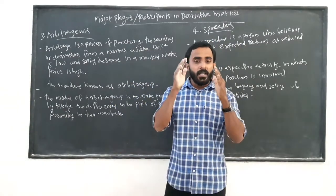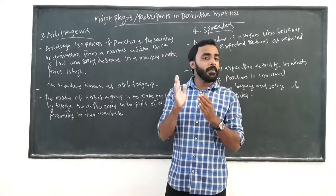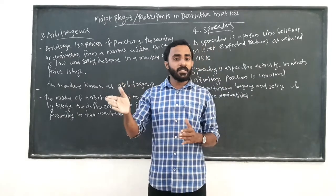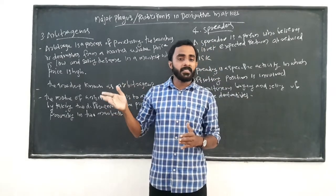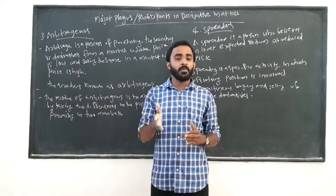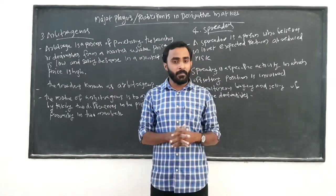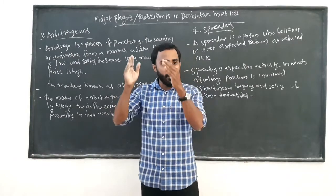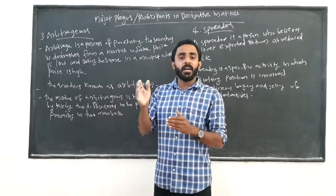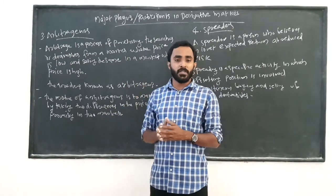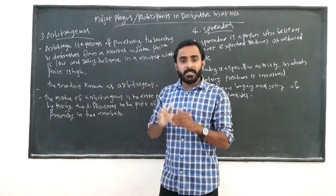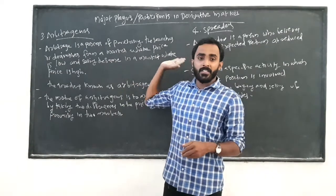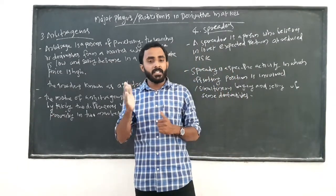The four participants in the derivative market are: hedgers, speculators, and arbitragers and spreaders. The hedgers and speculators are the first participants.